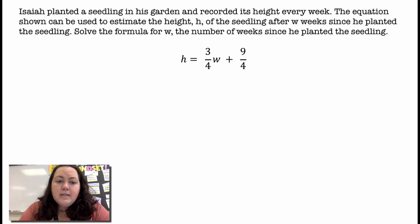Alright, Isaiah planted a seedling in his garden and recorded its height every week. The equation shown can be used to estimate the height h of the seedling after w weeks since he planted the seedling. Solve the formula for w, the number of weeks since he planted the seedling. Alright, so I have h equals 3 fourths w plus 9 fourths.